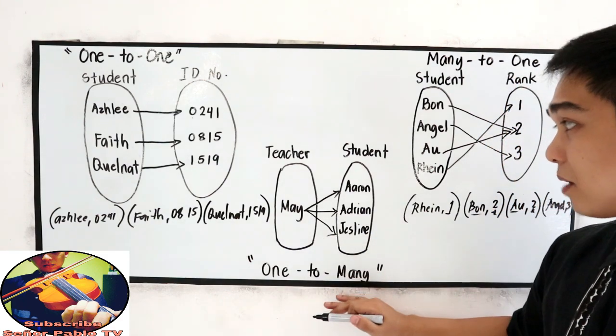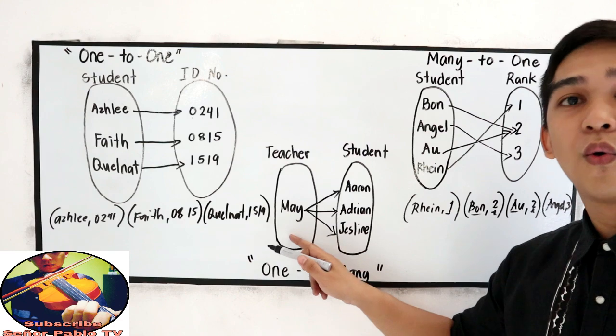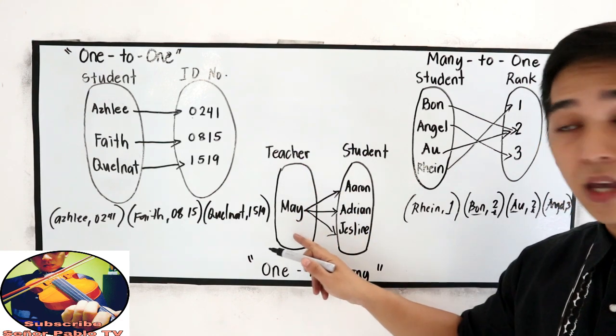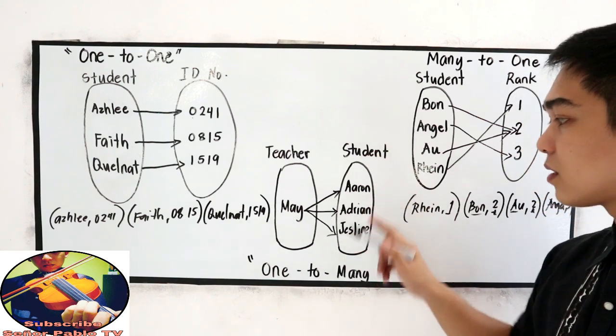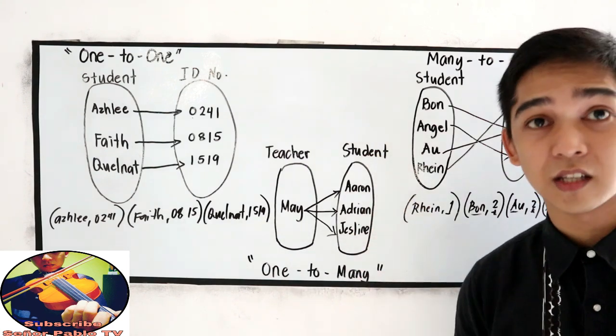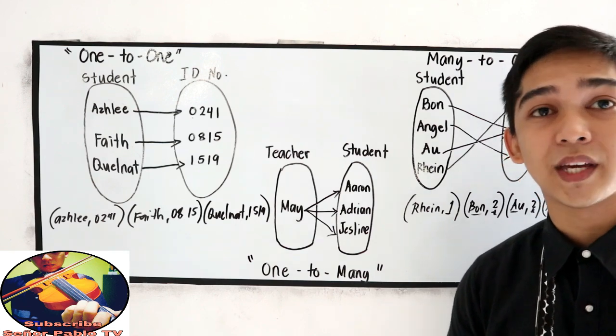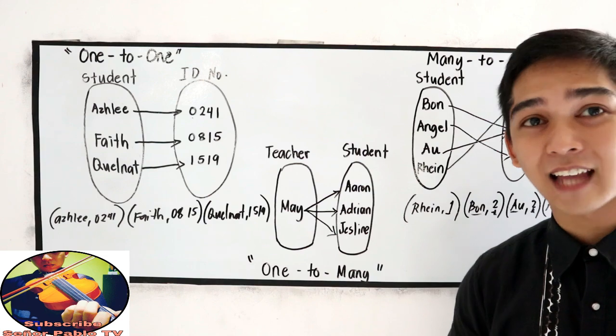So, why one-to-many? Because you only have one domain, which is the teacher, Teacher May, and a lot of students, Aaron, Adrian, and Jess Lian. Now, the question is, which of the following is a function, and which is not?